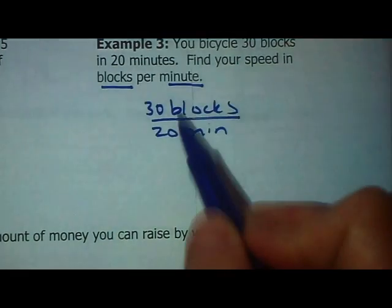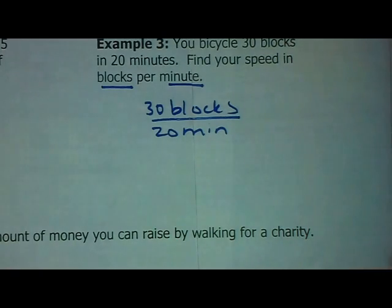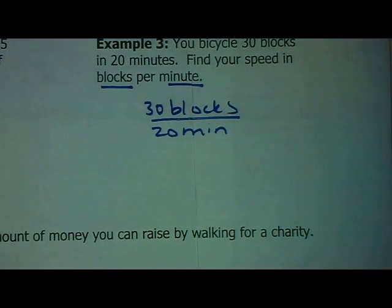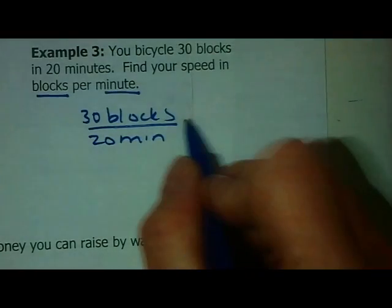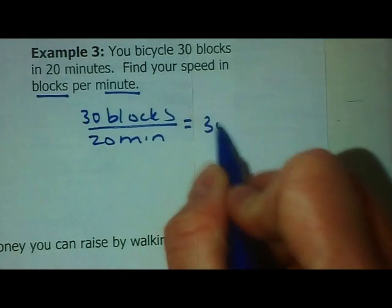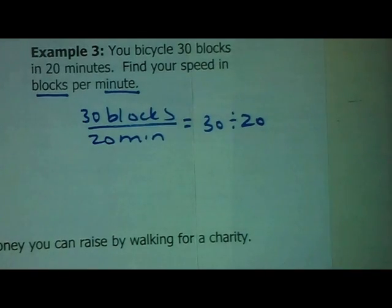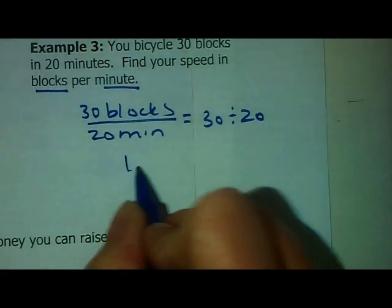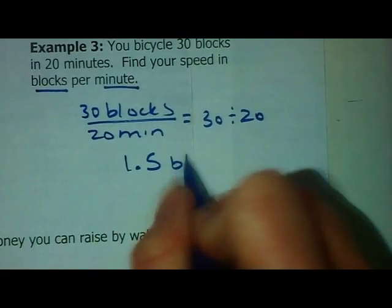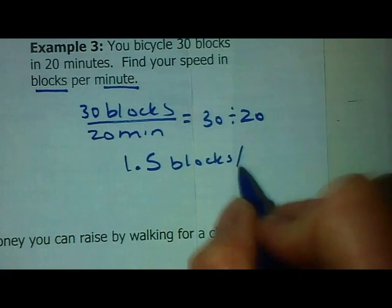And, again, I want this to not be 30 blocks per 20 minutes. I want to know how many blocks we can travel in 1 minute. So, you're finding the unit rate. That means take 30 divided by 20. When you take 30 divided by 20, you get 1.5. So, that means 1.5 blocks per minute.